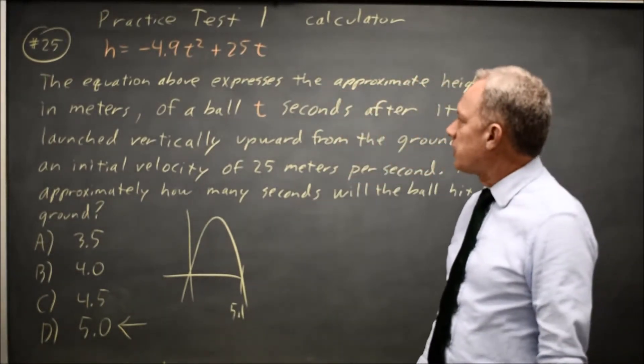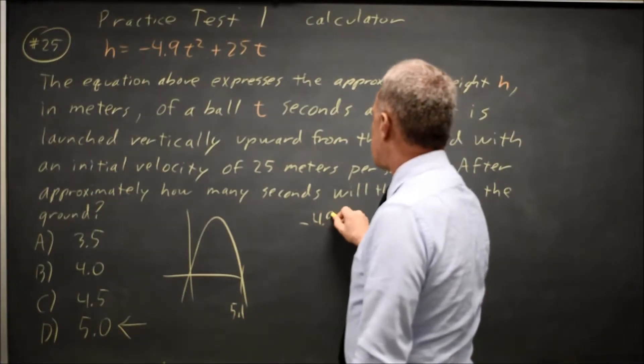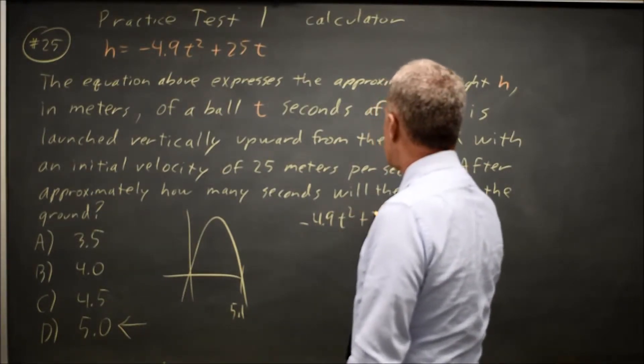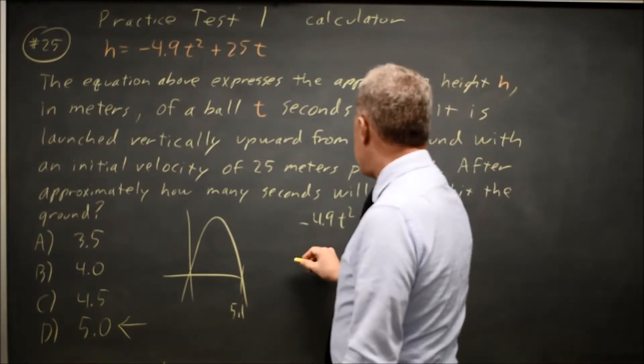I could solve this by hand. Set h equal to 0, negative 4.9 t squared plus 25t equals 0. Factor out t,